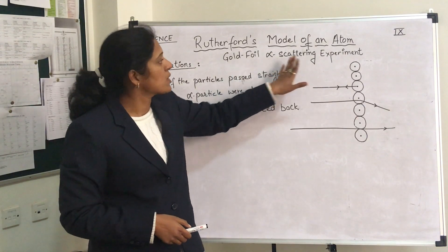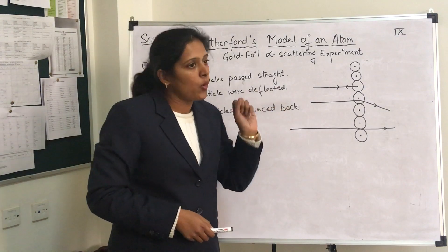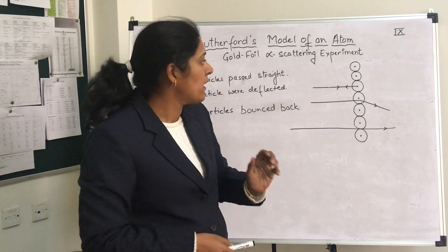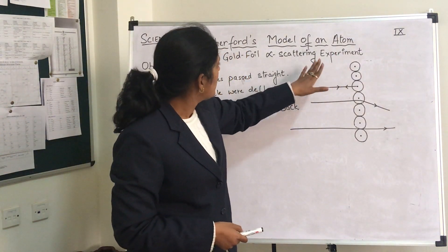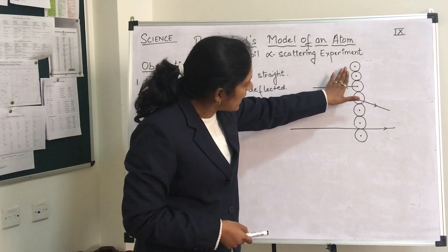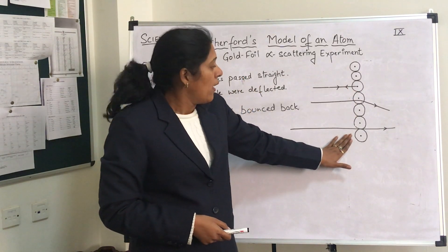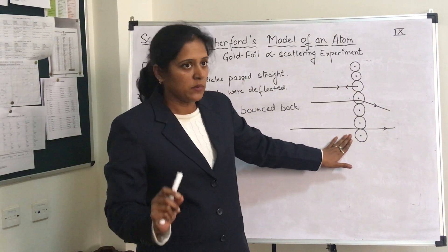The first thing is why he chose gold foil. Because gold is the most malleable metal and he could literally get thin sheets of gold which were almost one atom thick.